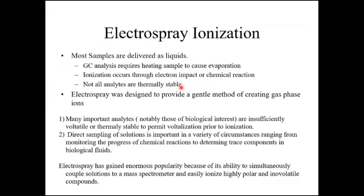Not all analytes are thermally stable. If your sample contains proteins or compounds of biological origin, they may degrade due to heat. Electrospray ionization was designed to provide a gentle method of creating gaseous phase ions. Many important biological molecules are insufficiently volatile and not thermally stable enough to permit volatilization prior to ionization — they degrade before they can be ionized.